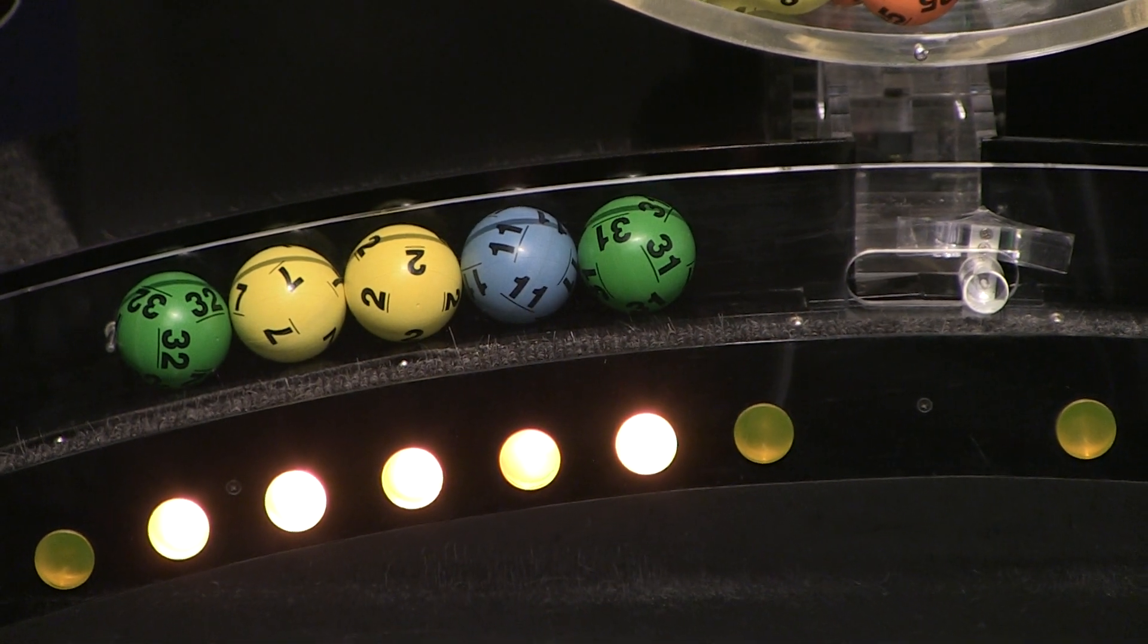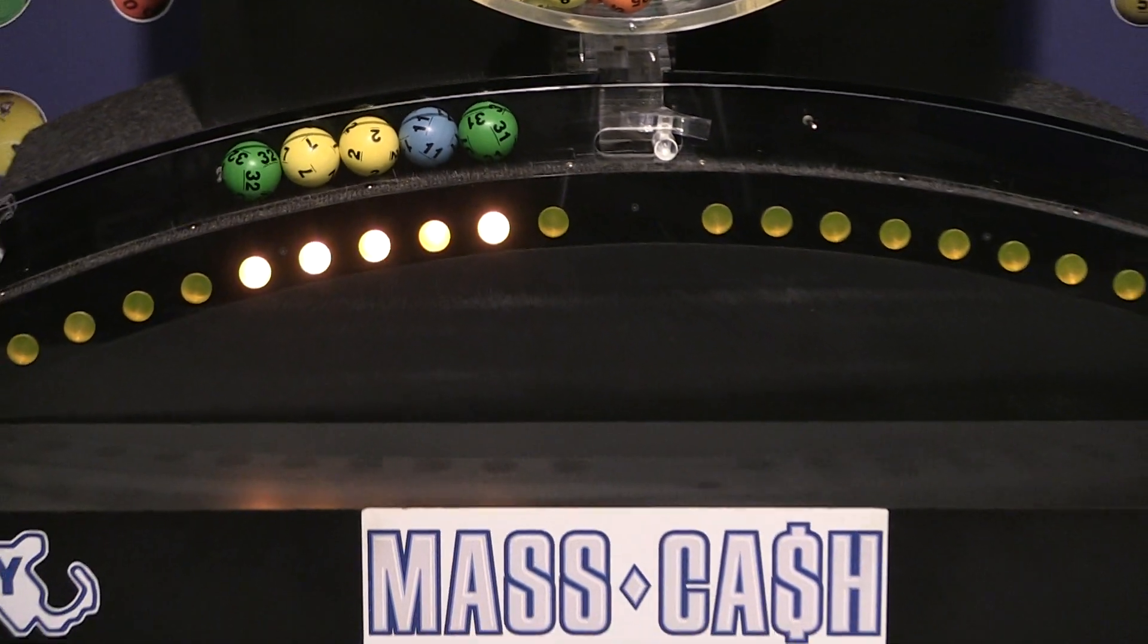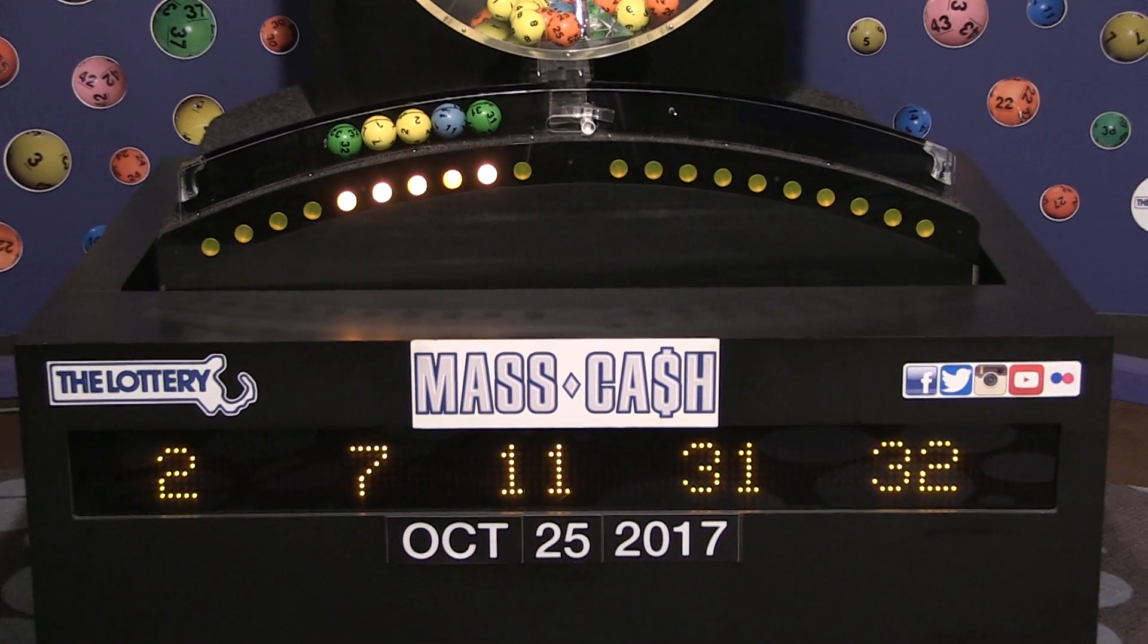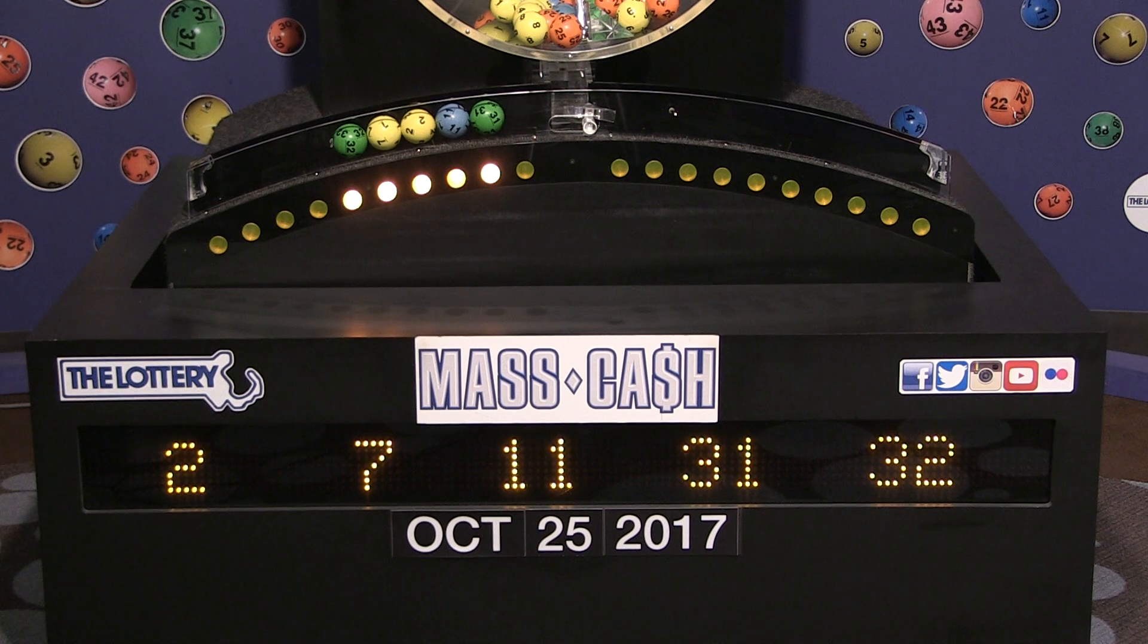Once again, the winning Mass Cash numbers for Wednesday, October 25th are 2, 7, 11, 31, and 32. We'll see you shortly for the Megabucks Doubler and Powerball Drawings.